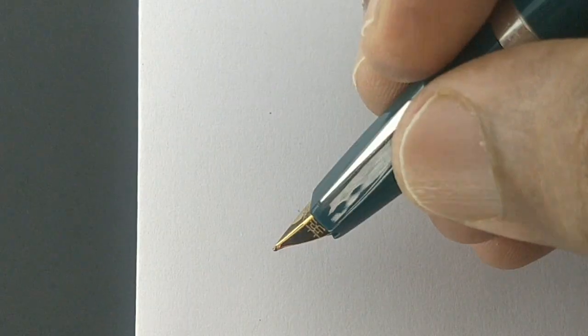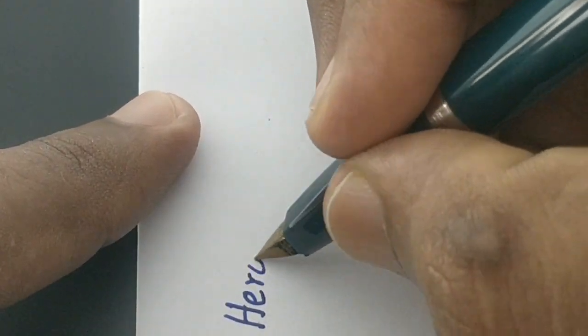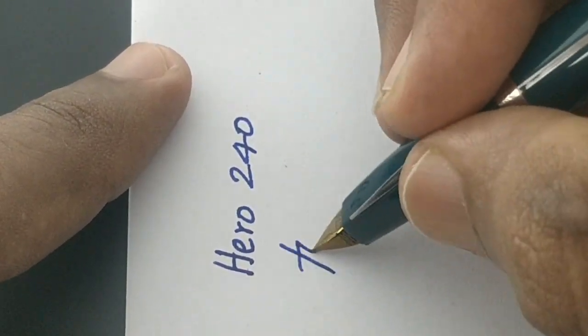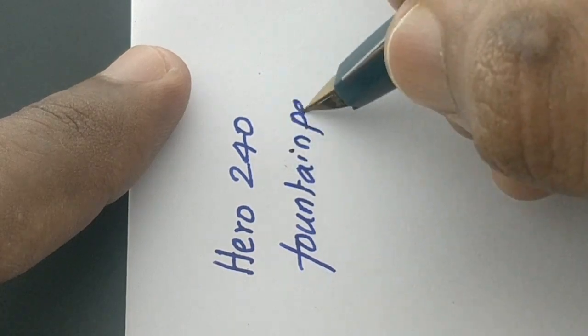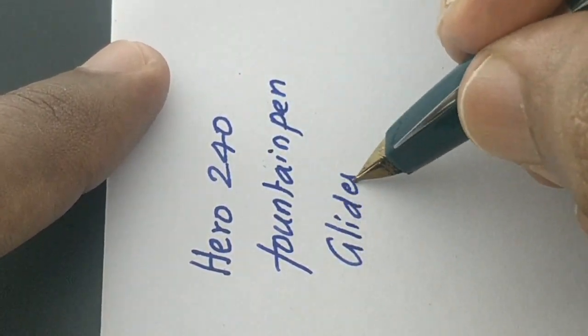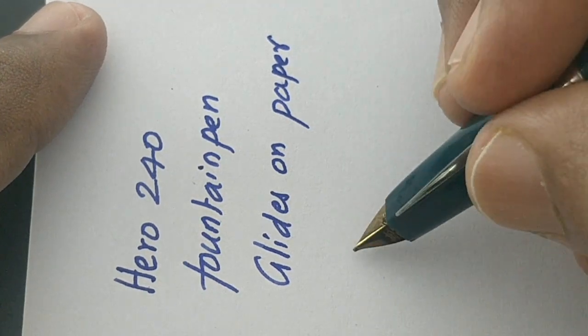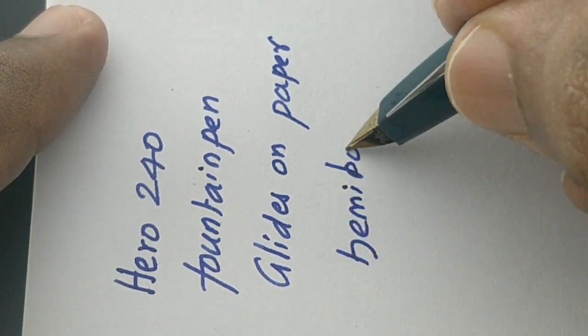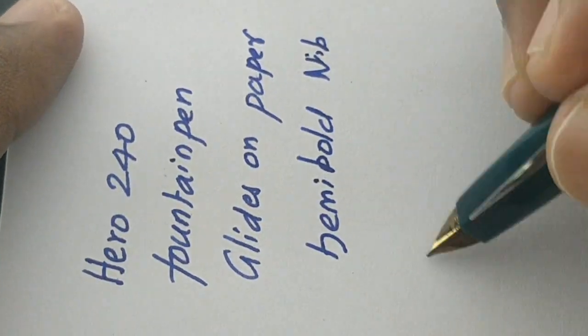Back compression is there because of its semi-bold tip. On 70 GSM paper, it writes more freely and the impression looks a bit bold too.